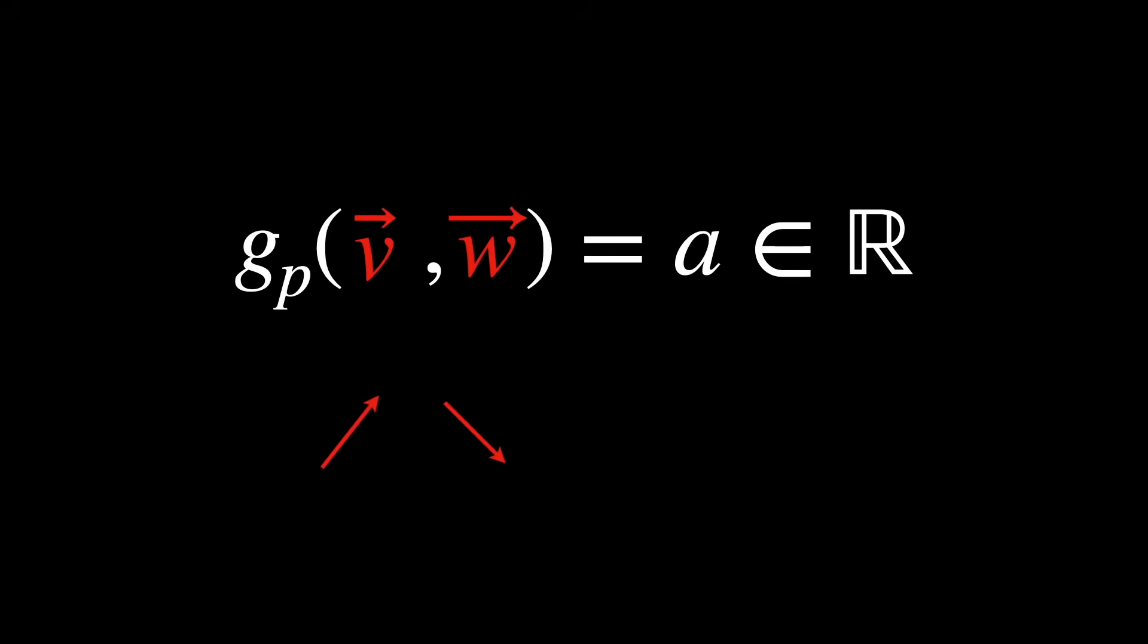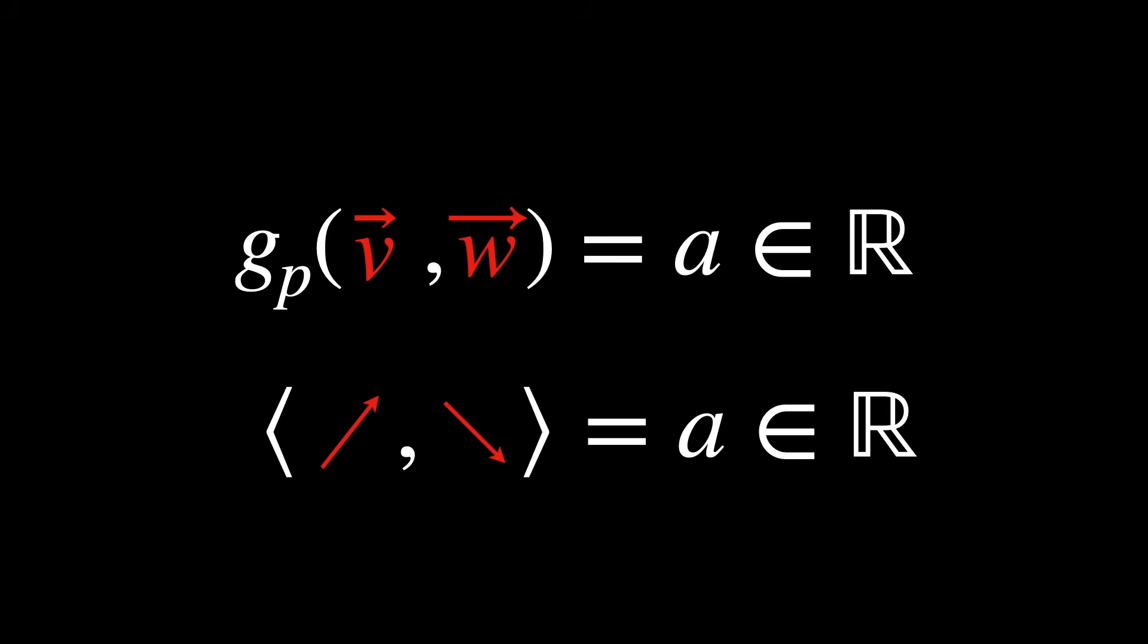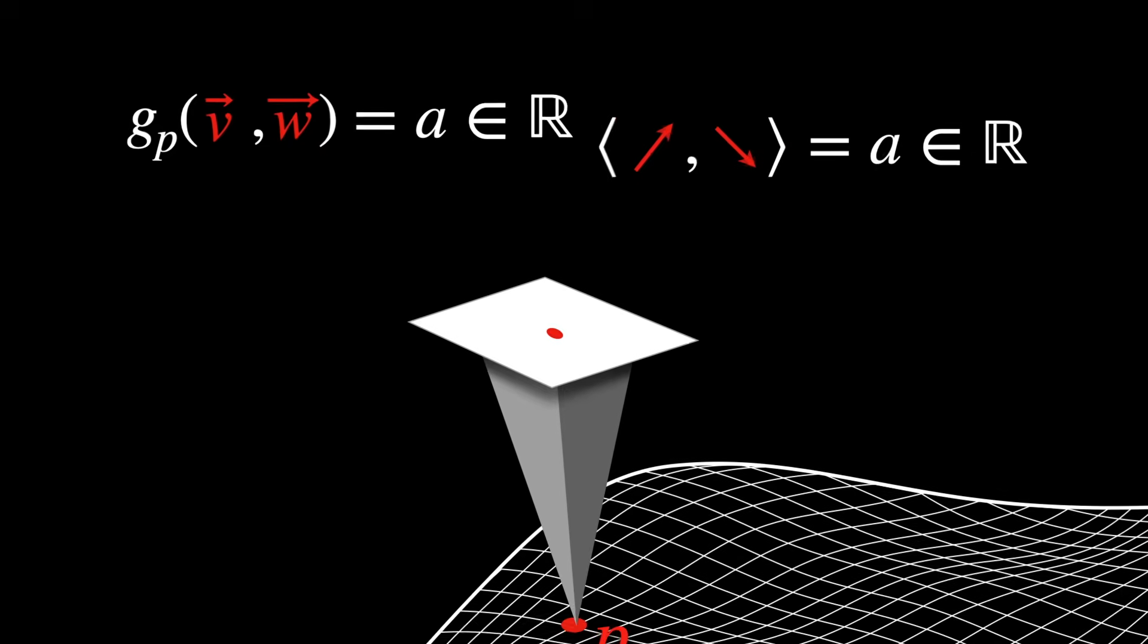Anyway, you can think of it this way. You feed in two tangent vectors at a point P, and the metric spits out a real number, which is the result of their dot product, since, by definition, the tangent space at each point is a Euclidean space, so it's flat.